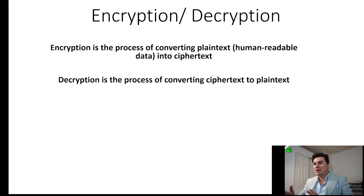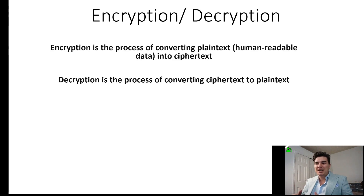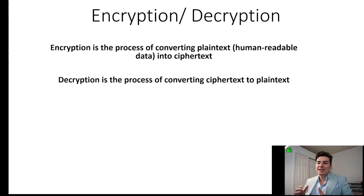Encryption and decryption — the best and most simple definition for that is that encryption is the process of converting plain text into ciphertext, and decryption is the process of converting ciphertext to plain text.